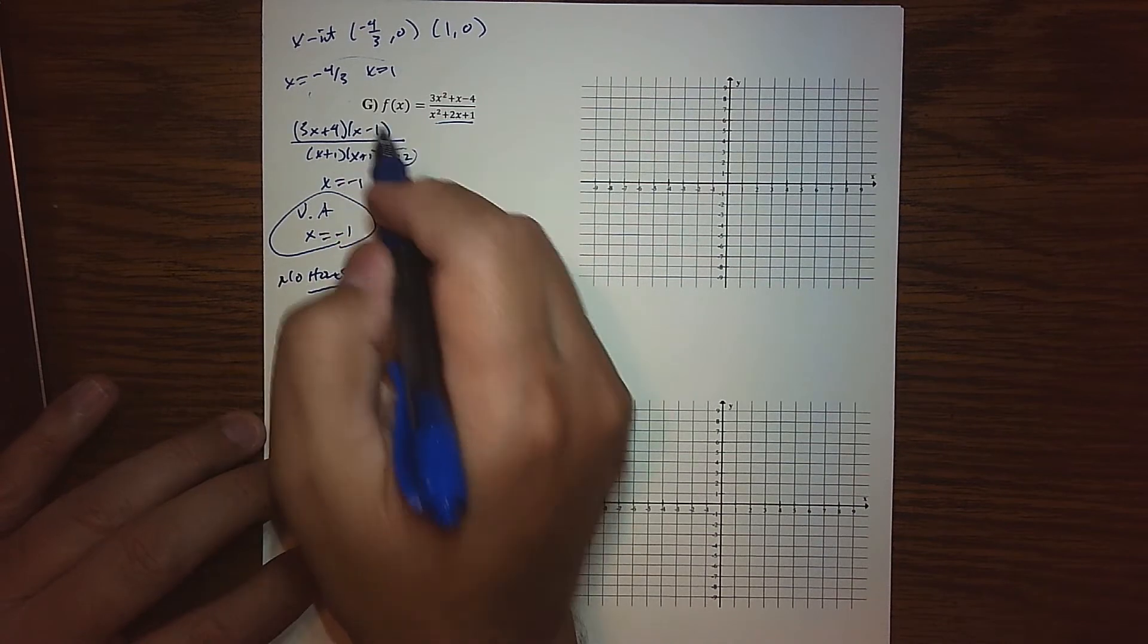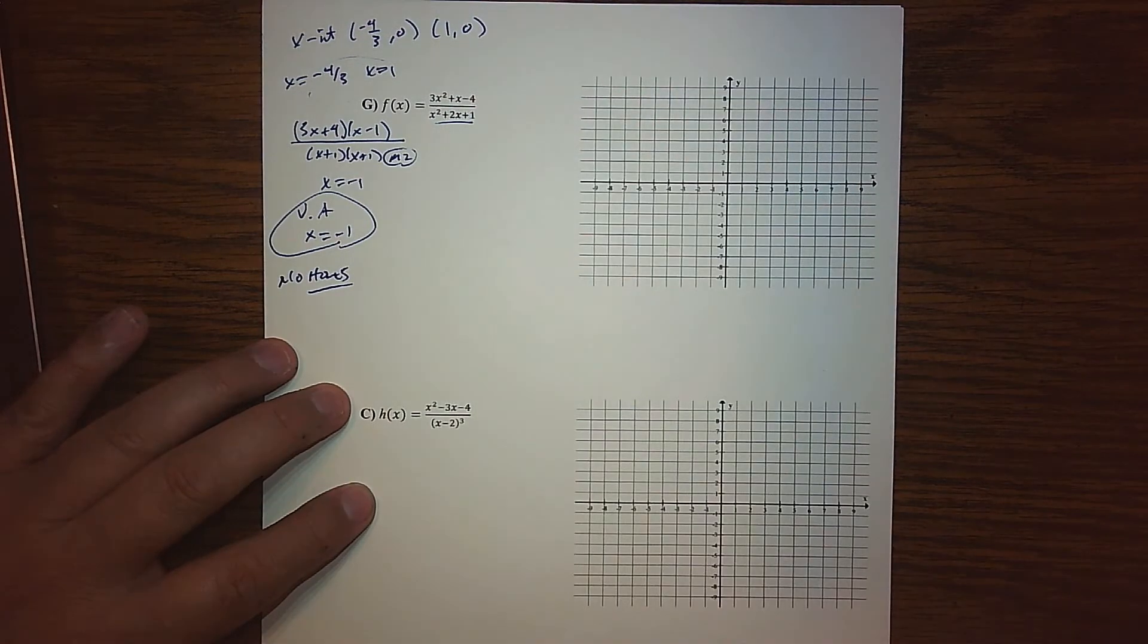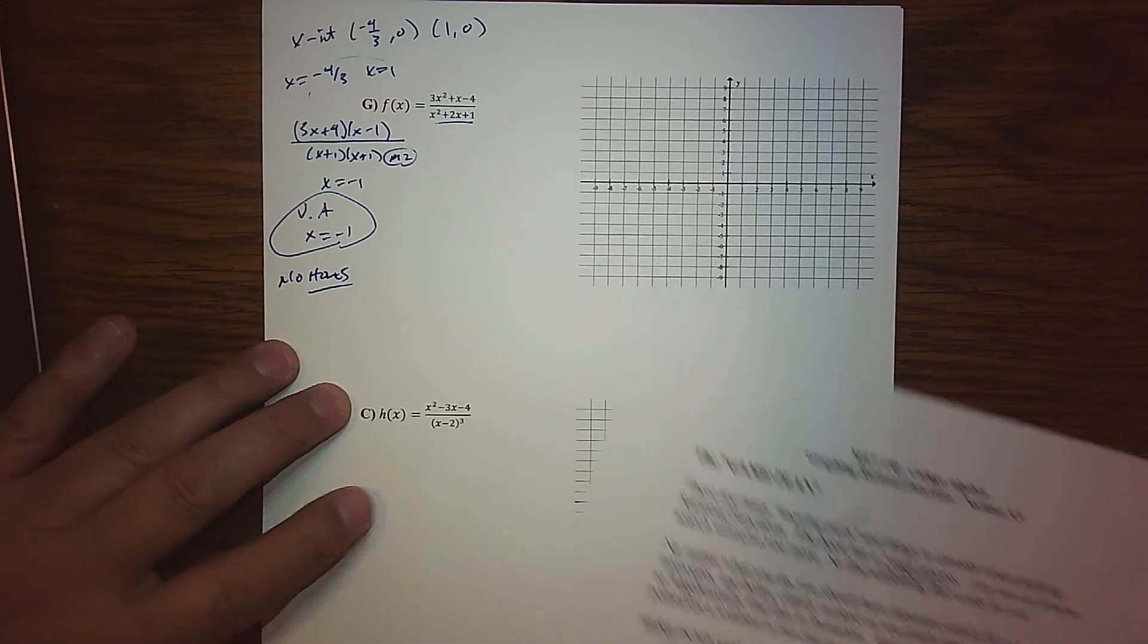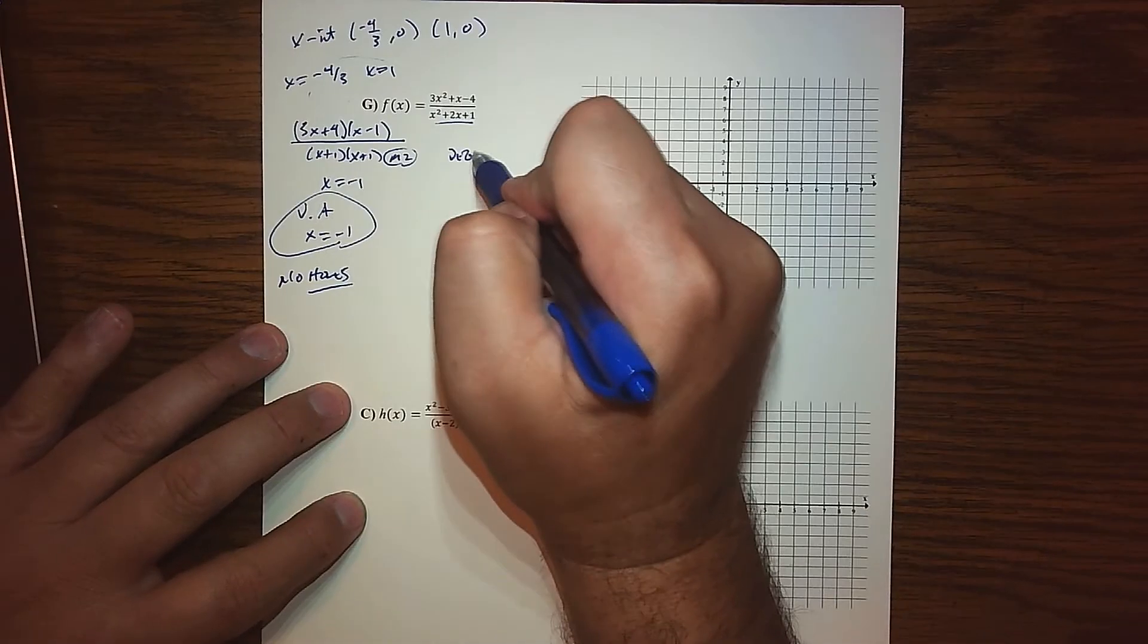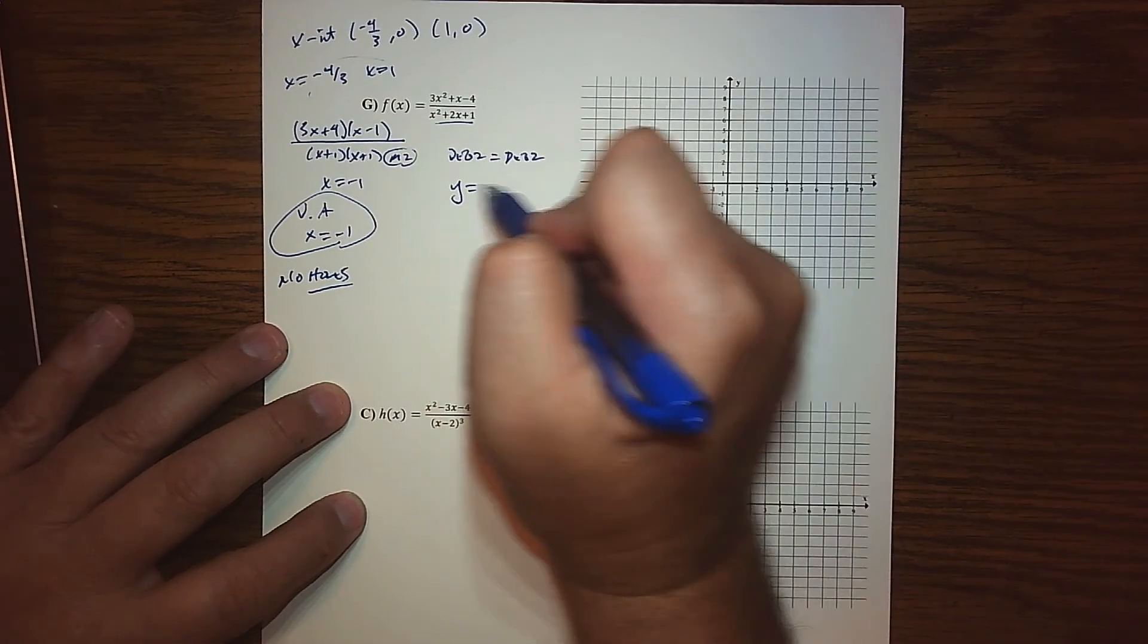There's no holes because there's no common factor, so we're off to the races. My next item up for bid - we did step one, step two is not necessary. Step three: what's the end behavior? I noticed that my degrees match, right, I have a degree two equals a degree two.